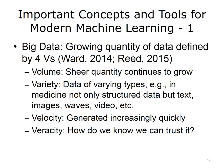There are some other important concepts and tools for modern machine learning. One is big data, referring to the growing quantity of data that's available — though it's not just about the amount of data. Big data is defined usually by the four Vs. The first V is volume, and the sheer quantity continues to grow. The next V is variety, meaning we have many varying types of data, especially in medicine, including not only structured data such as lab tests and prescriptions, but also text, images, waves, video, and more. Big data is also characterized by velocity, in that it's generated continuously and comes at us quickly. Finally, there's the issue of veracity, as we have to know that we can trust the data source.